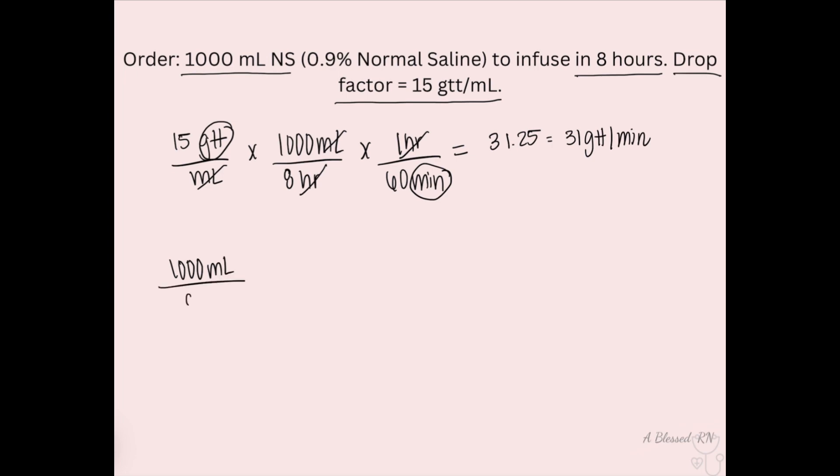Another way is to find the rate, which would be dividing 1000 mLs over eight hours, which will give you 125 milliliters per hour. You would then use your volume over time in minutes. Don't put hour at the bottom. Multiply times your drop factor.